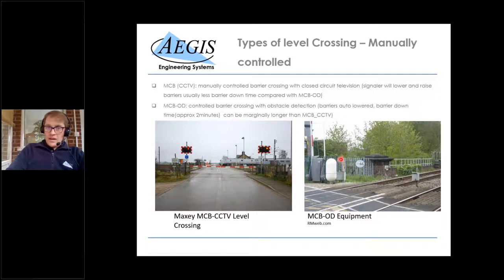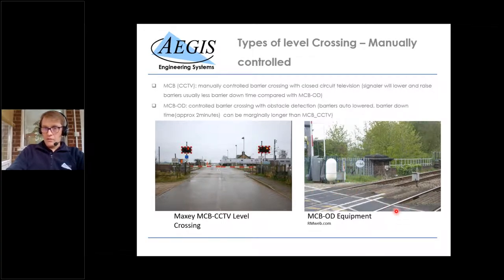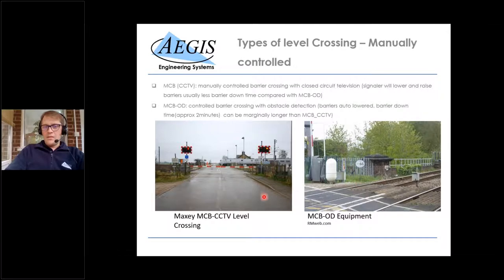The next upgrade is obstacle detection — MCBOD, affectionately known as the 'giant Tic Tac', about a metre high. When a train comes along it hits a treadle, which opens the casing. There's radar and LiDAR inside that scans the crossing surface for obstacles. If there's a vehicle there it alerts the signaller and puts the protecting signal to red. More and more of these are being installed, replacing CCTV crossings, because there's less signal interaction and barrier downtime is marginally less.